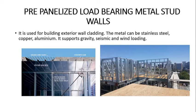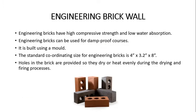Now let's cover engineering brick walls, which we missed earlier. In buildings where we need more strength and low water absorption, we use engineering bricks. These engineering bricks have holes in them, as shown in the picture, which allow the brick to heat evenly during the firing process in the furnace. Engineering bricks have high compressive strength and low water absorption, meaning they can be used as a damp proof course. The standard size of an engineering brick is 4 inches by 3.2 inches by 8 inches, and these bricks are made using a mold.